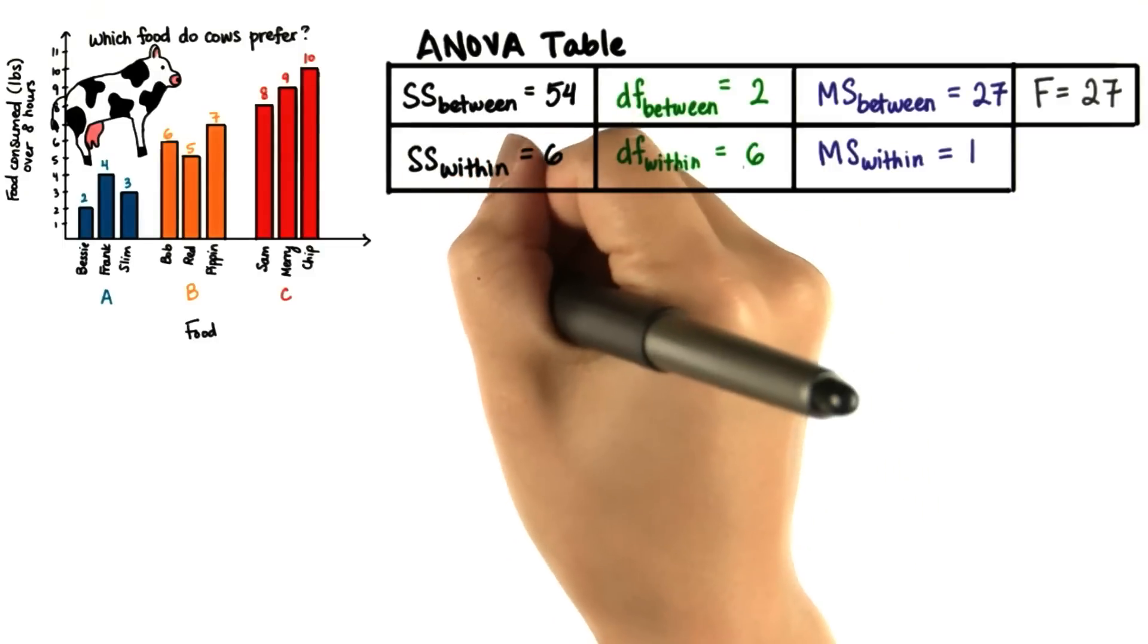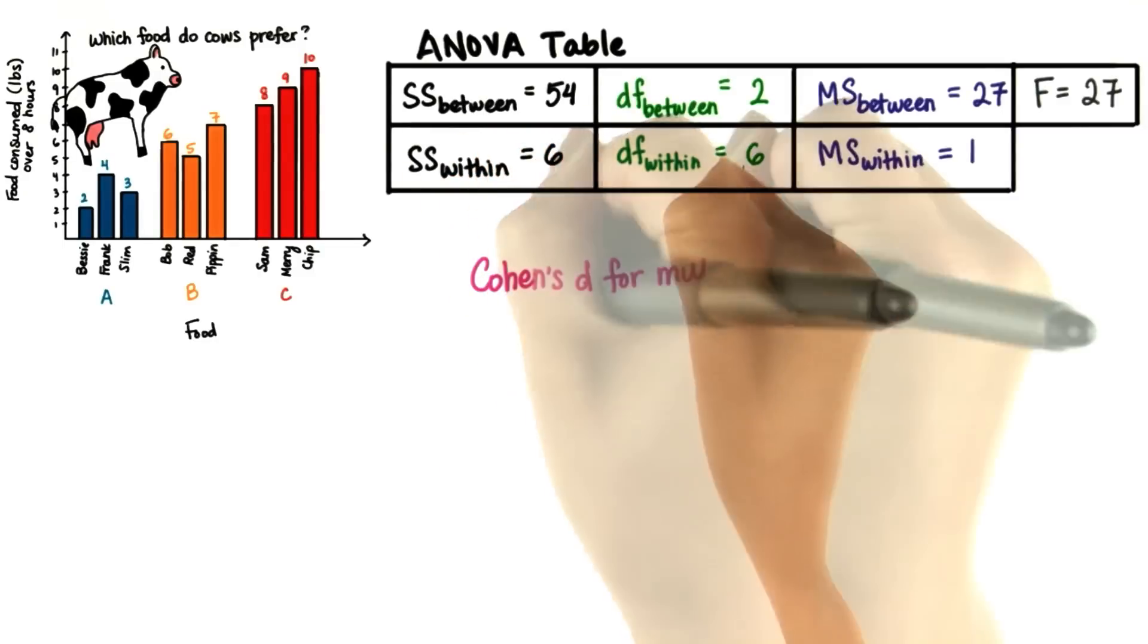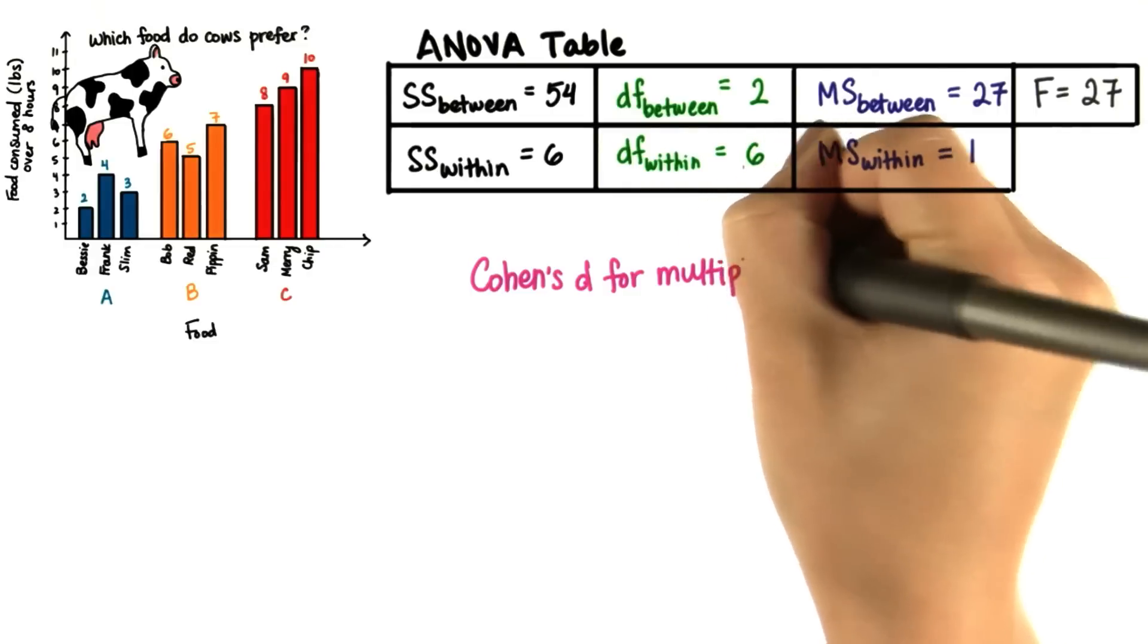We can also compute Cohen's d for multiple comparisons. And remember that this is a measure of effect size.